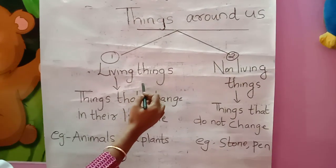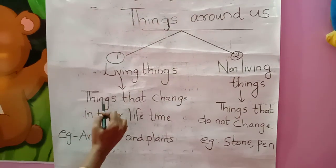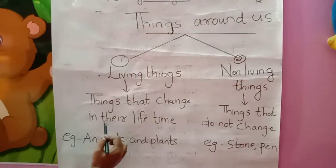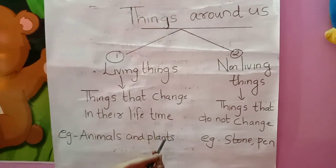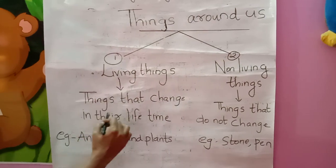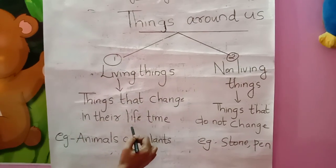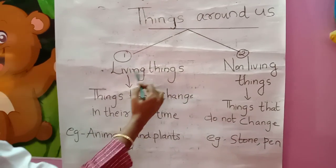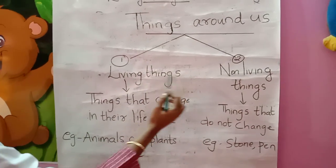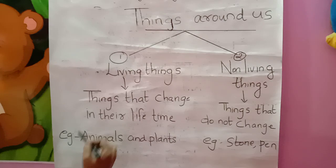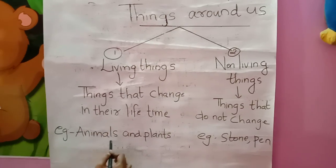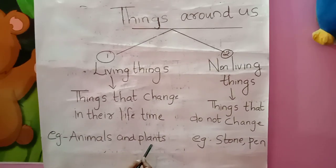Living things are things that change in their lifetime. Living things are changing. For example, animals and plants.